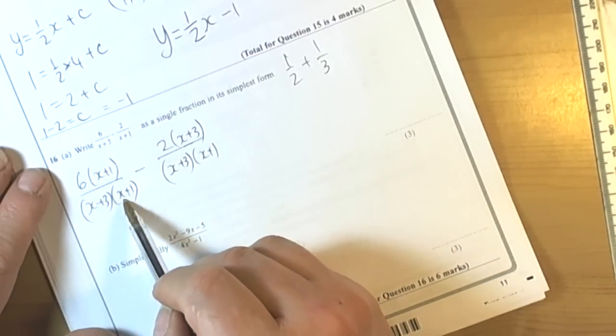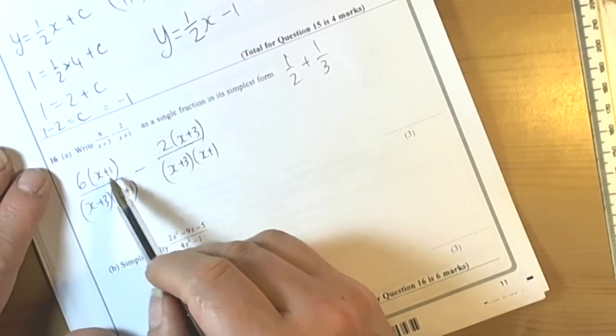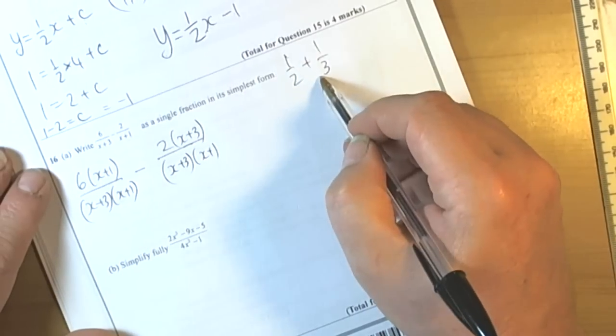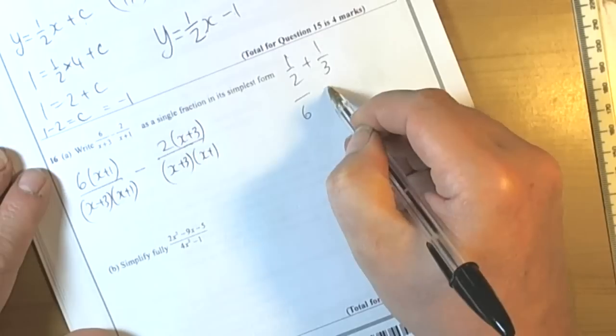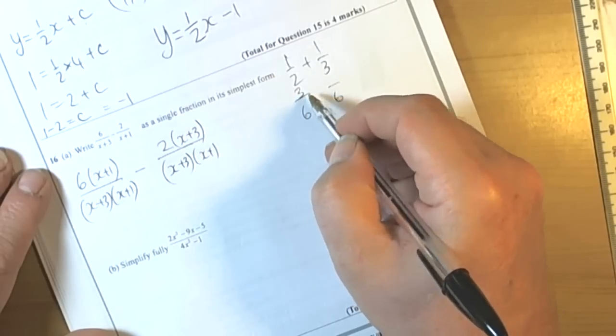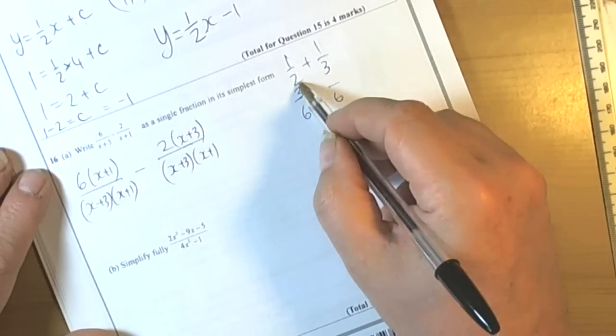This one was missing the x plus 1, so we had to multiply top and bottom the same when we do any fractions. Same as if we had to change these, we'd multiply this one by 3, the opposite number there, and we'd multiply this one by 2, the opposite number there.